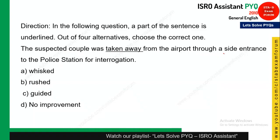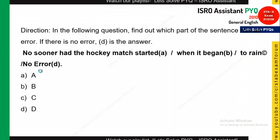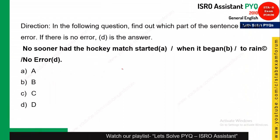The next question: 'The suspected couple was taken away from the airport by a side entrance to the police station for interrogation.' 'Taken away' is correct, but you need to choose the best word from the options. The meaning of 'whisked' is to move very quickly. Since the couple was suspected, they should be taken away very quickly. So option A — 'whisked' — is the correct answer.